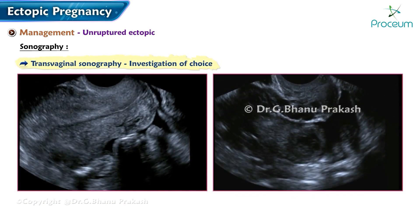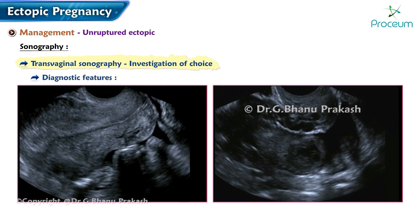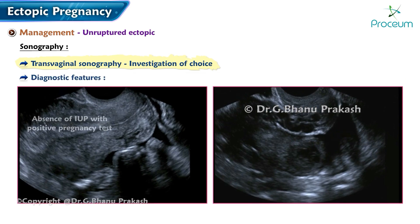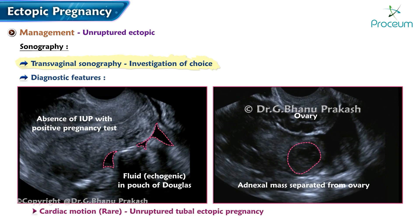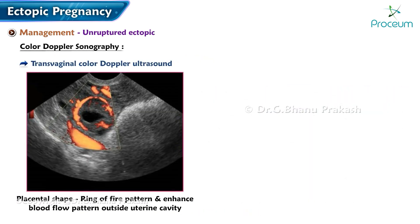Sonography: transvaginal sonography is the investigation of choice. Diagnostic features include absence of intrauterine pregnancy with a positive pregnancy test, echogenic fluid in the pouch of Douglas, adnexal mass separated from the ovary, and rarely cardiac motion in an unruptured tubal ectopic pregnancy. Colored Doppler sonography can identify the placental 'ring of fire' pattern and enhanced blood flow pattern outside the uterine cavity.